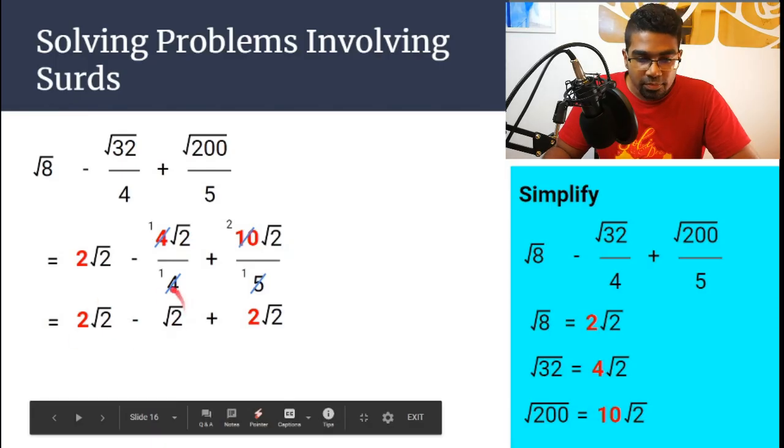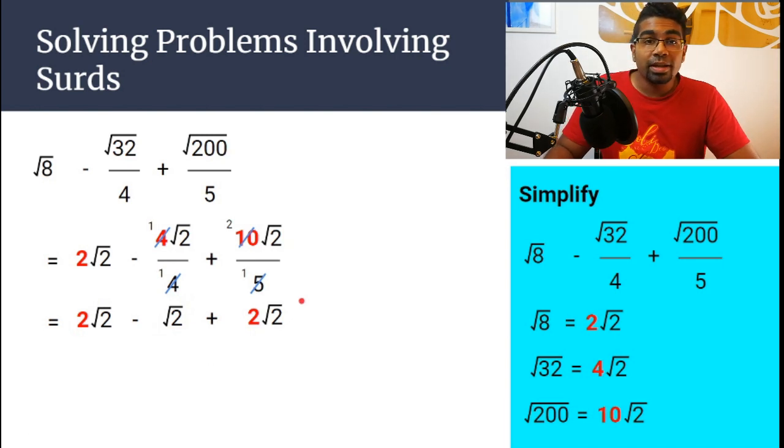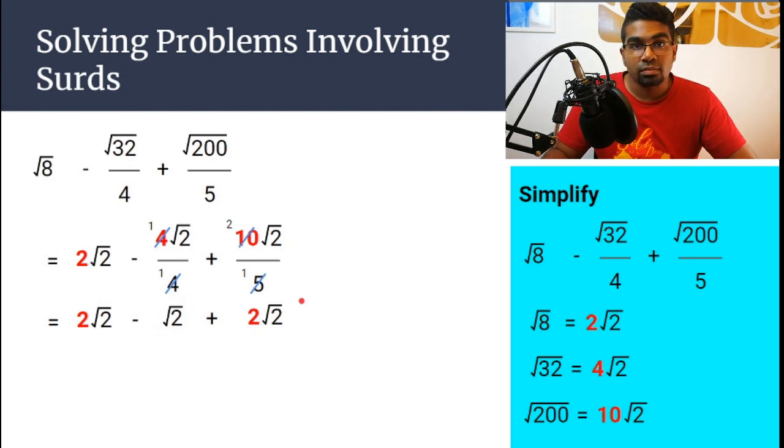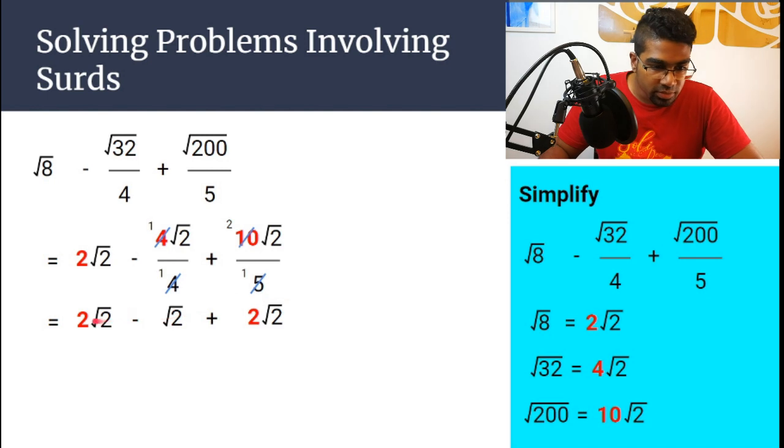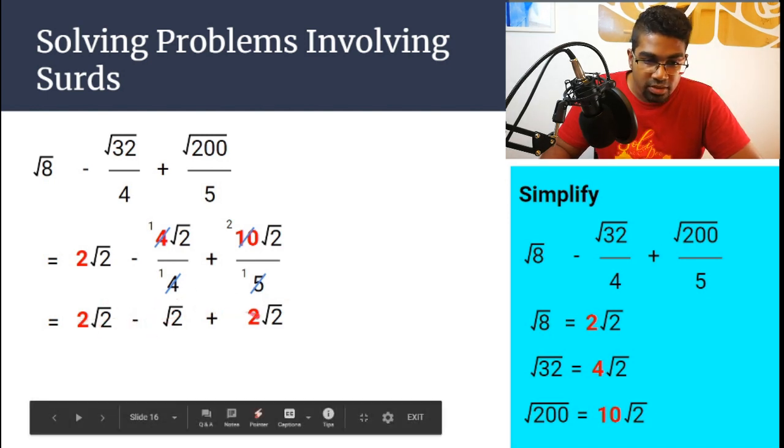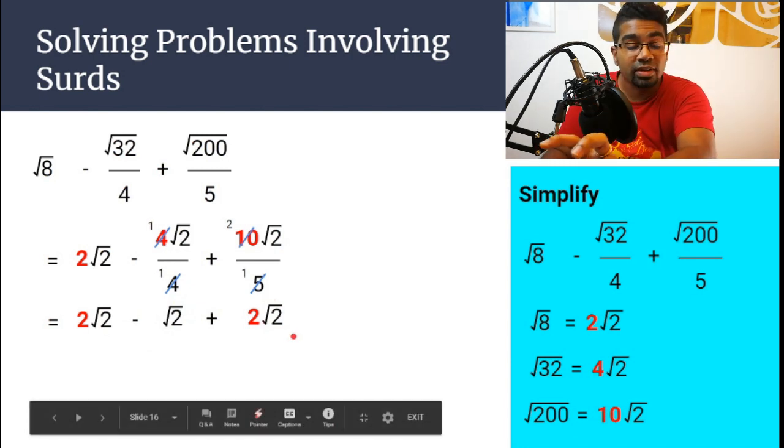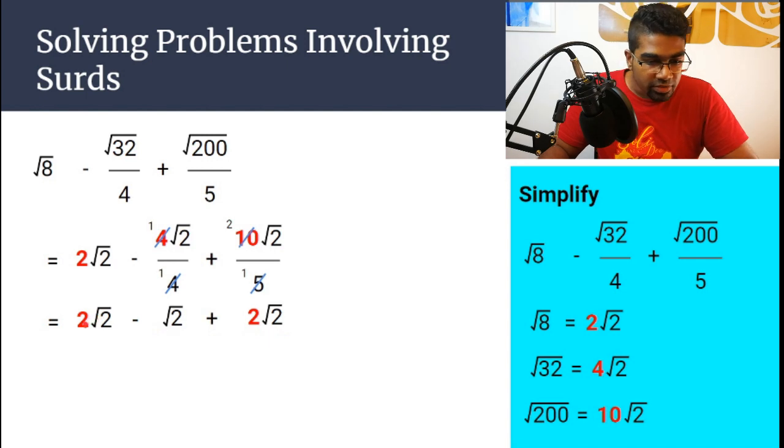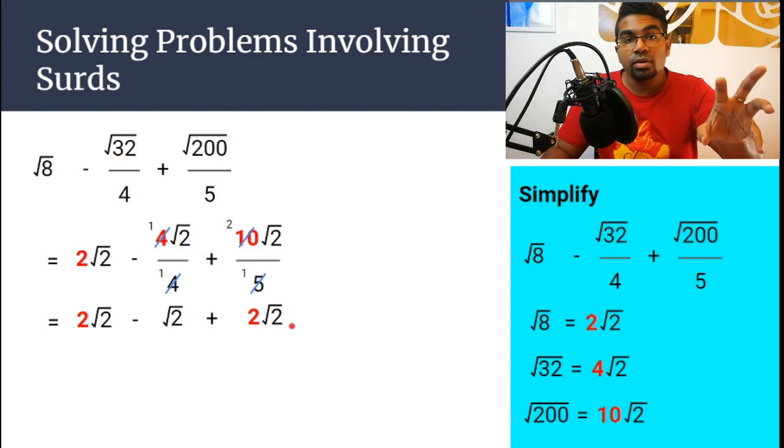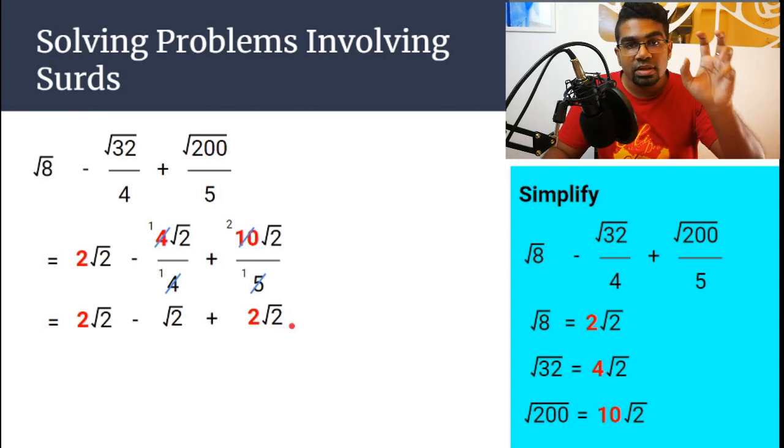So when you look at the surd, you can treat the surd just like any other constant. You can make it into x or y or z, or apples for example. So this will be 2 apples minus 1 apple plus 2 apples. You just treat the surd 2 as a constant. If you are more familiar with x, then you can treat this as 2x minus x plus 2x. Substitute square root of 2. Substitute the surd as a single constant.